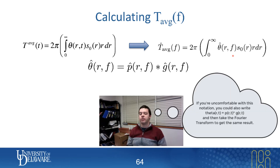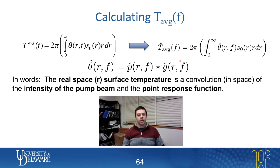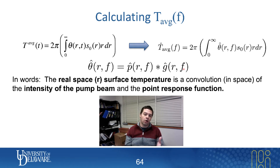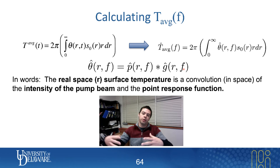Let's think about it physically. I'll claim that the surface temperature — the actual surface temperature as a function of position and its Fourier transform — is just a convolution of essentially whatever the pump beam is doing with what I'll call the point response function. In words, the real-space surface temperature is just a convolution of the intensity of the pump beam and the temperature point response function. The point response function G(R) represents what temperature you'd get if you dumped energy into just one point. But since our pump beam is spread out in space, I need the convolution of the pump beam with that point response function.